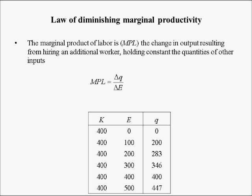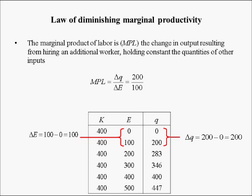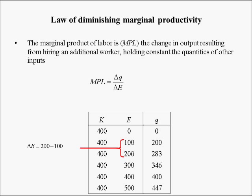The marginal product of labor is the change in output resulting from hiring an additional worker, holding constant the quantities of other inputs — here, holding capital constant. When employees increase by 100 and output increases by 200, the change in output divided by change in employees is 200/100 = 2. So on average, adding one employee increases output by 2 in that range. When employees go from 100 to 200, output increases by 83, so on average adding one employee increases output by 0.83 — hence the law of diminishing marginal productivity.